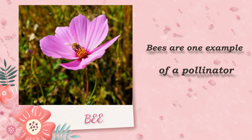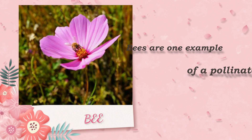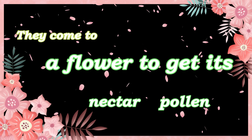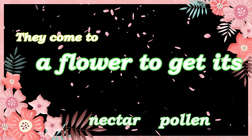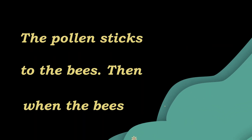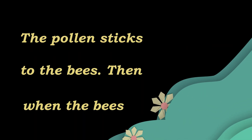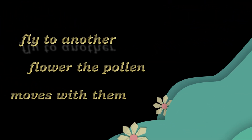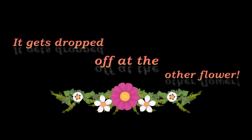Bees are one example of a pollinator. They come to a flower to get its nectar or pollen. The pollen sticks to the bees, and when the bees fly to another flower, the pollen moves with them and gets dropped off at the other flower.